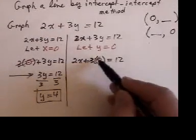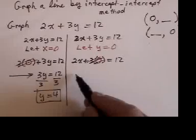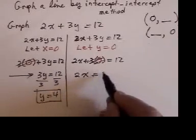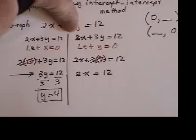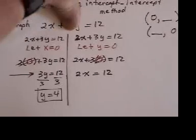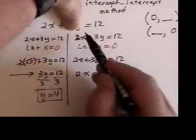Over here, 3 times zero is zero. So I'm left with 2X equals 12, which is like going back up to the original and putting my finger over the 3Y and I have 2X equals 12.